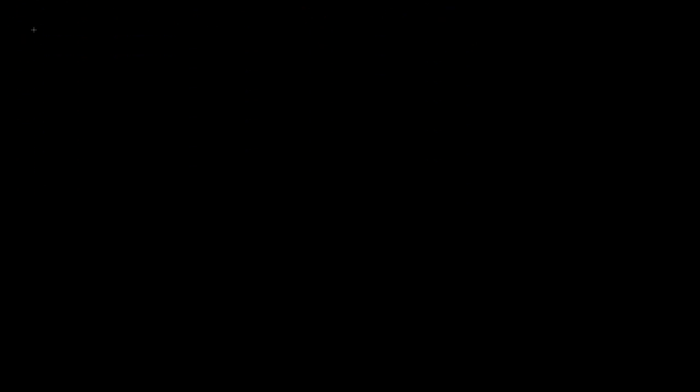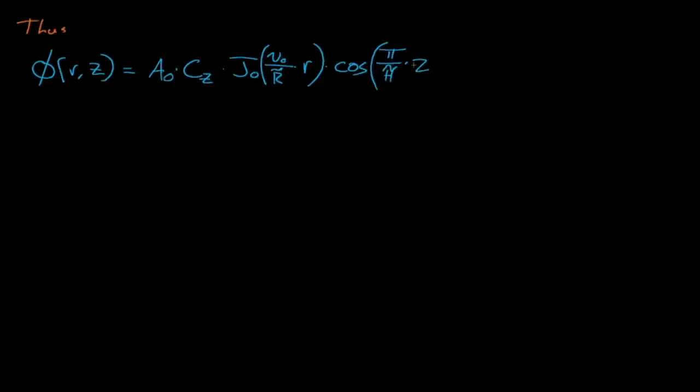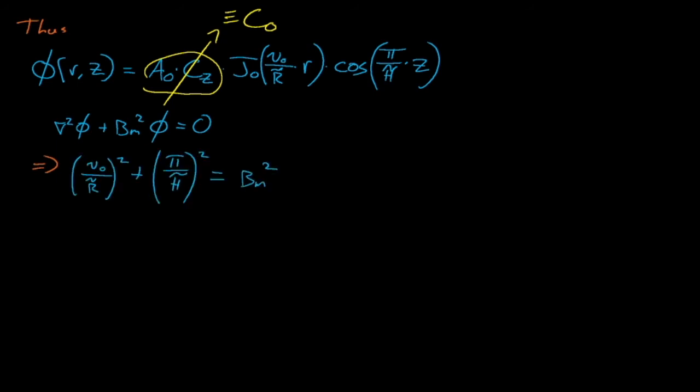And thus that our 2D Rz flux is given by this combination of a cosine term and a Bessel function, where, for convenience, we will combine our constants into this C0 constant. If we substitute this expression into our Helmholtz diffusion equation from before, apply the Laplacian, and then cancel out the residual flux terms, we see that nu0 divided by r tilde squared plus pi divided by h tilde squared must equal the material buckling for a critical system.